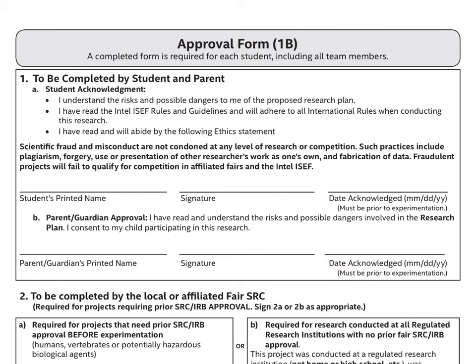Note that Part 1 is the only part that needs to be filled up. Lastly, this form has to be filled up by each student, so for team projects, that means every member of the group has to have a Form 1B. The point of emphasis in this form is the date of acknowledgement — this date has to actually be before the start date specified on item number 6 of Form 1A.